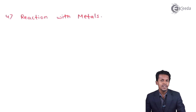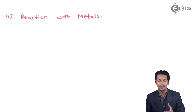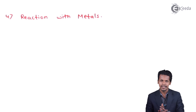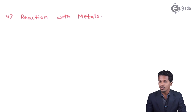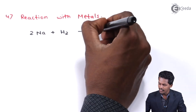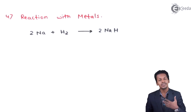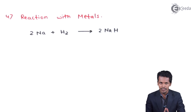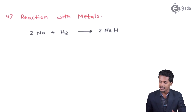The next reaction is with metals, especially s-block elements like sodium. Sodium is very much reactive with hydrogen to produce sodium hydride. This kind of hydride is possible with elements that have the capacity to lose electrons. Hydrogen also has the capacity to take electrons to get a stable electronic configuration. In sodium hydride, the oxidation state of hydrogen is −1, since sodium always has a +1 oxidation number.